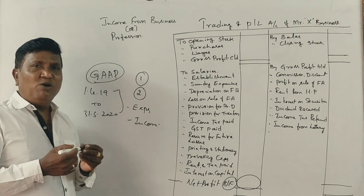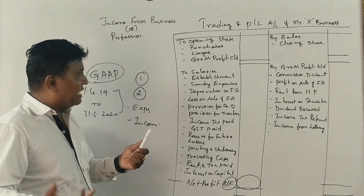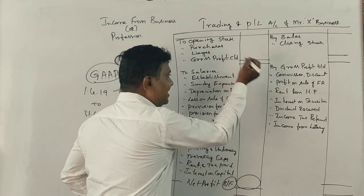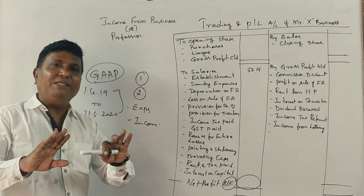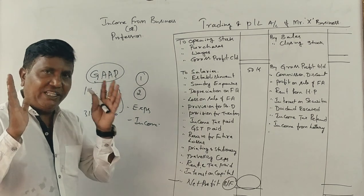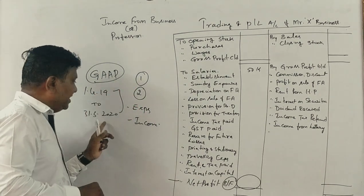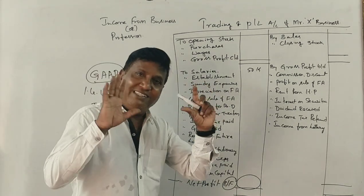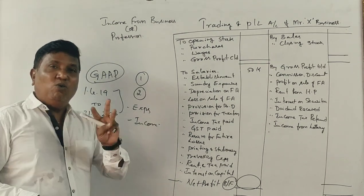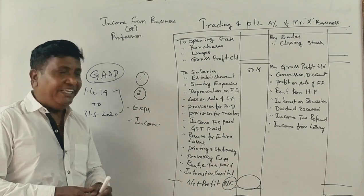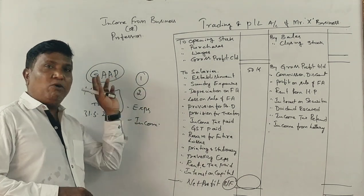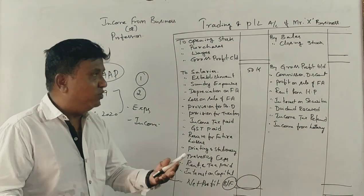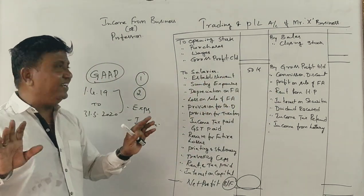For example, salaries: say Rs. 50,000 salary is the total expense for the previous year 2019-20. But actual payment made is only Rs. 30,000 — meaning Rs. 20,000 is outstanding or due. As per accounting principles and accrual basis, we record the full Rs. 50,000 as expenses. Only Rs. 30,000 payment is made. So the full Rs. 50,000 is recorded as salary expense in the books.